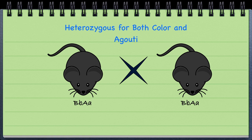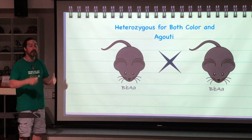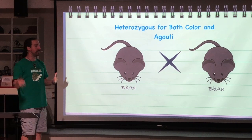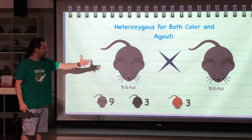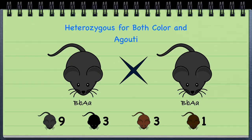If we cross two heterozygous individuals — a black agouti crossed with another black agouti, both heterozygous for both traits — we see the typical Mendelian ratio of 9:3:3:1. Nine-sixteenths appear black agouti, three-sixteenths appear black, three appear brown agouti, and only one-sixteenth is plain brown.